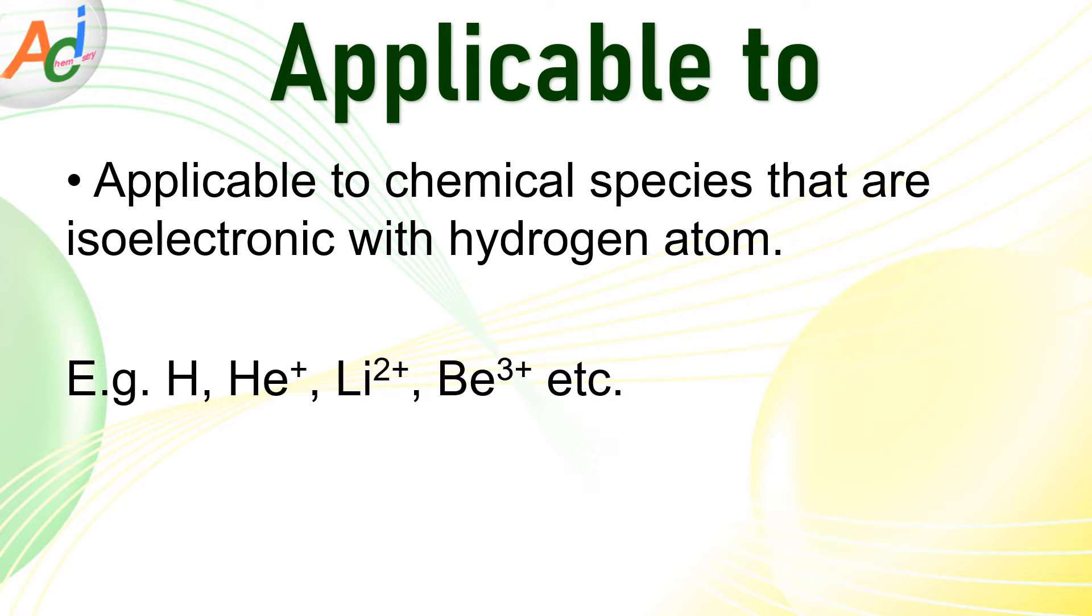You may be wondering what exactly is meant by isoelectronic? Don't worry, it is a rather straightforward concept. The atoms or ions with an identical number of electrons are considered to be isoelectronic. For instance, the hydrogen atom and the helium plus ion, there is only one electron. Other examples are Li^2+, Be^3+, etc.